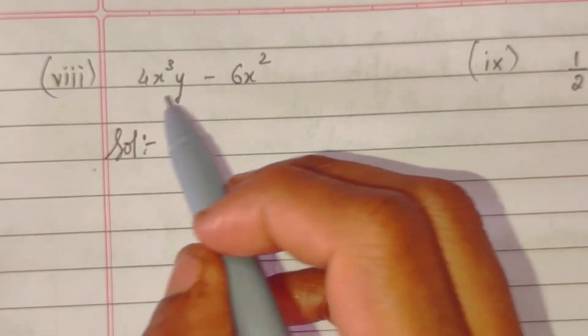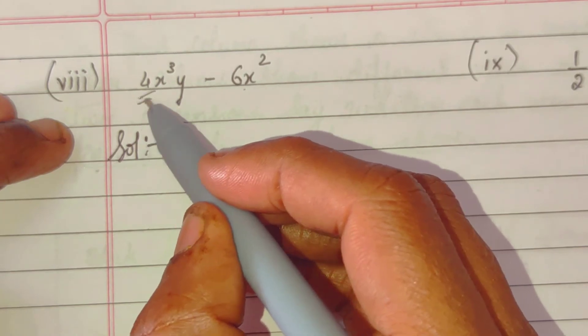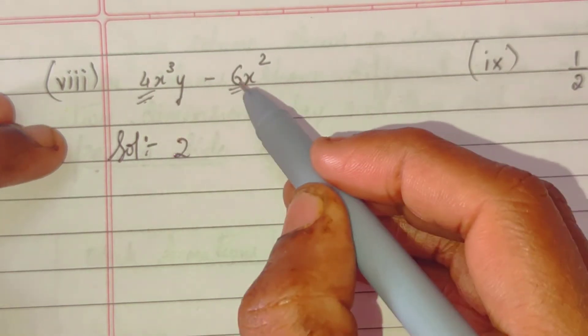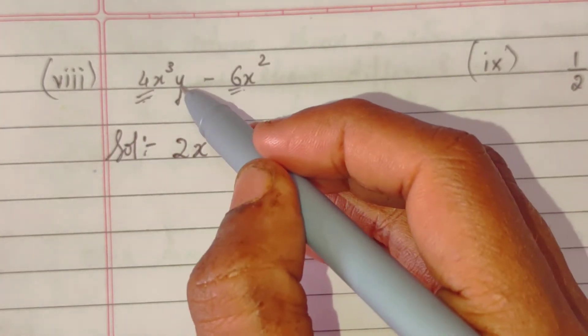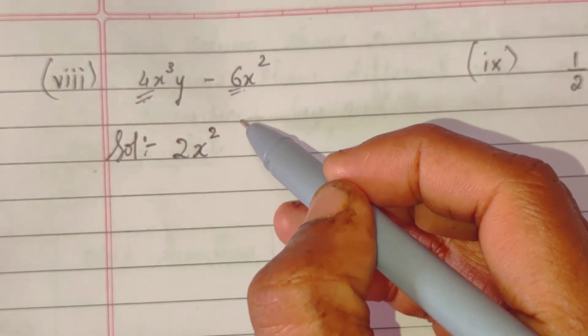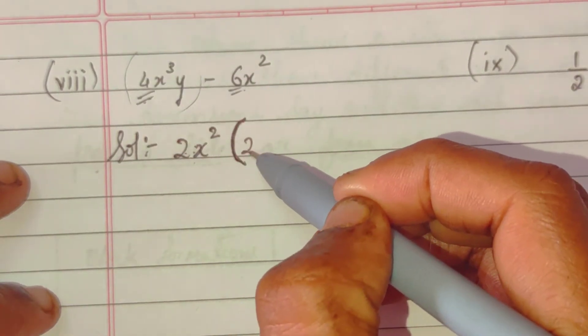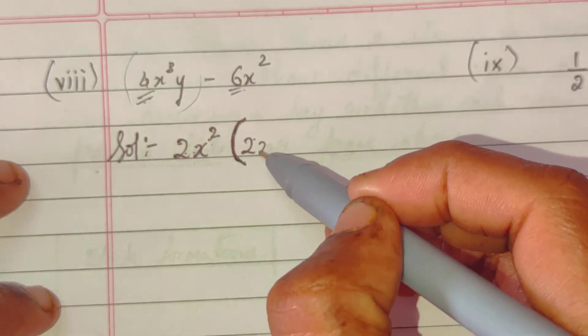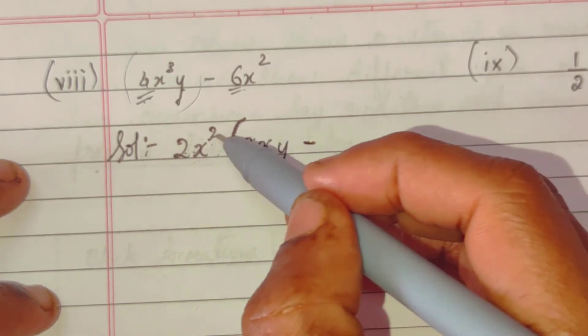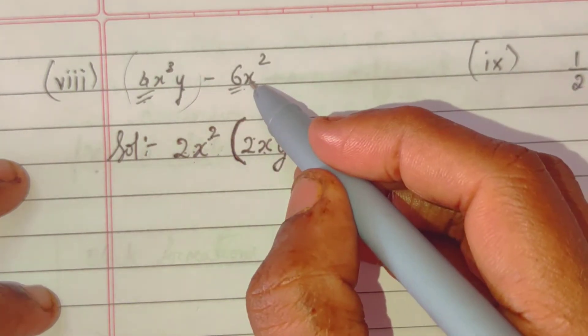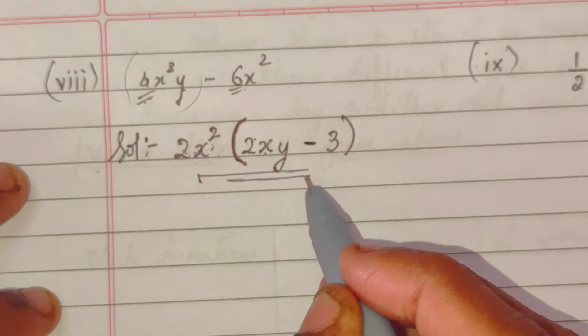Now see, again there is no proper formula expression, so we have to find out common. We have two terms common, so it's 4, 6, 2. Then here is x square, there is cube, so we can take out x square as common. 2x square bracket, 2x into y minus 3. So this is done, factorization.